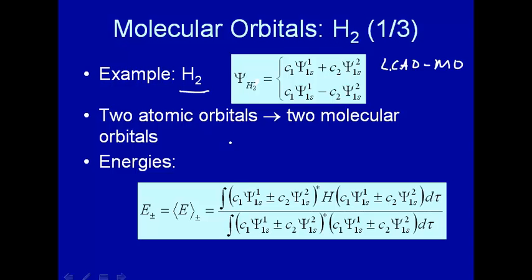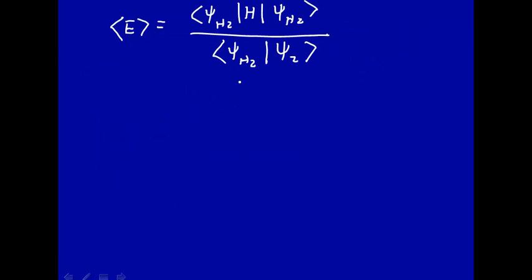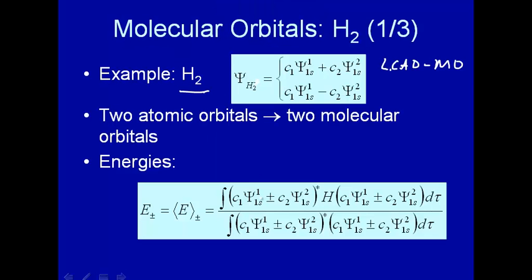So if you substitute in for this expression, this is what you get — I've changed again to integral form. We're labeling these plus and minus for when we're adding the two atomic orbitals or subtracting the two atomic orbitals — linearly combining two 1s orbitals. Here's the integral we have to solve, and this is our normalization integral.